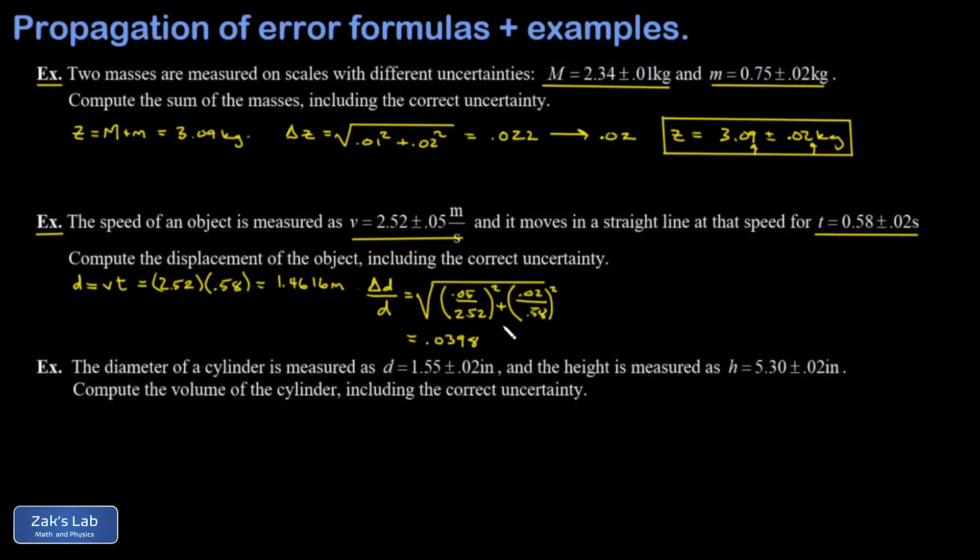And then I have to do a little bit more in order to figure out the uncertainty on D itself. So in this formula, I'm going to multiply both sides by D, and that will isolate delta D. So I have delta D is equal to D multiplied by 0.0398. And this uncertainty comes out to 0.058 with units of meters.